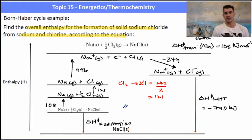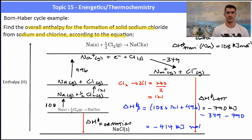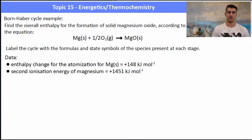So to work out the delta H of formation all we have to do now is add all of those numbers together and that will give us the delta H of formation. So we have 108 plus 121 plus 496 and then we can take away 349 and then take away another 790 and that leaves us with our delta H of formation which is negative 414 kilojoules per mole. So the delta H of formation of one sodium plus half chlorine to sodium chloride is negative 414.